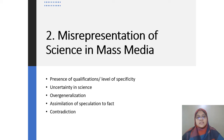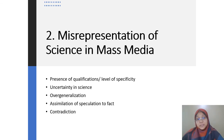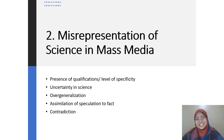The second part of this lecture is about misrepresentation of science in media. We're going to talk about the presence of qualification or level of specificity in the news report, the uncertainty in science, how it is usually being presented in the news, overgeneralization — something that quite often appears in mass media reports on science — assimilation of speculation to fact, and contradiction.